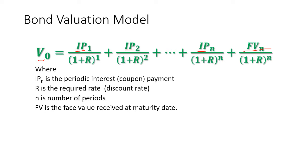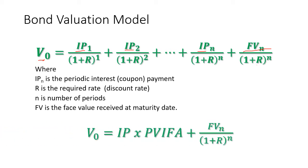To find the present value of all expected periodic interest or coupon payments and face value, we have to use a discount rate — the required rate of return by the investor. Since interest payments take the form of a series of equal and periodic cash flows, we can use the present value interest factor for annuity to find their present values and rewrite the equation: bond value equals periodic interest payments times PVIFA plus the present value of face value.